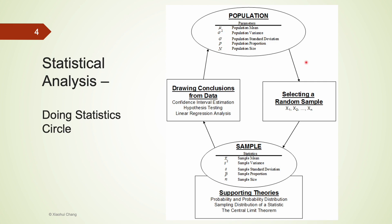A lot of times it's very difficult to fully understand the population because it's just too big. For example, if you're interested in understanding the average American income, you would have to collect data from the entire American population, which is a very large number. So in statistics, we go to the population and draw a small, random sample — as random as possible — that serves as a good representation of the entire population.